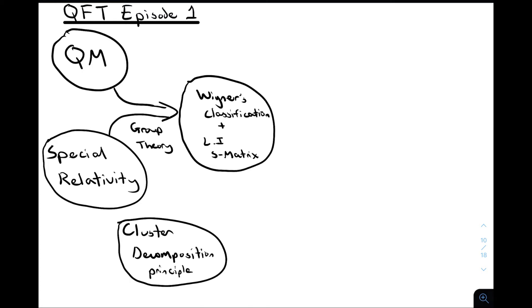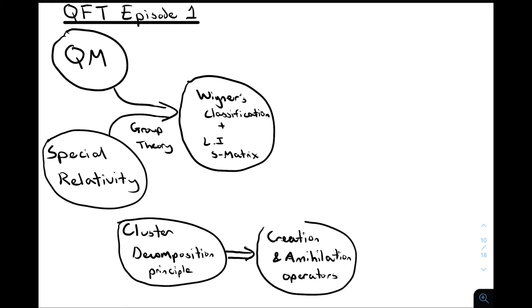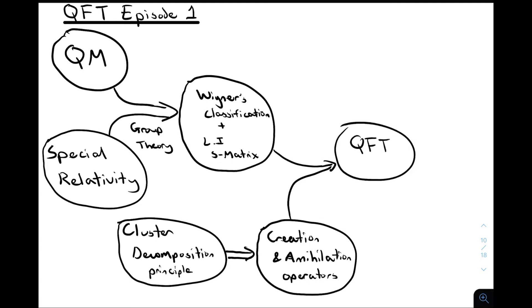The results of these two experiments in separate labs shouldn't affect each other. That will cause us to introduce peculiar operators called creation and annihilation operators. It is then the combination of the constraints on the Lorentz invariance of the S matrix and having to build the theory out of creation and annihilation operators that will naturally lead us to quantum field theory.